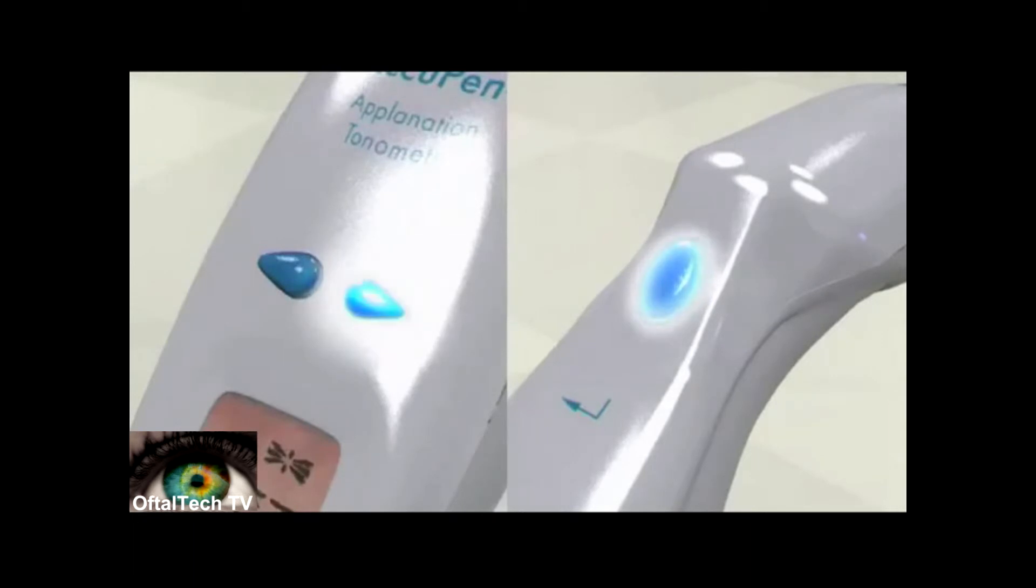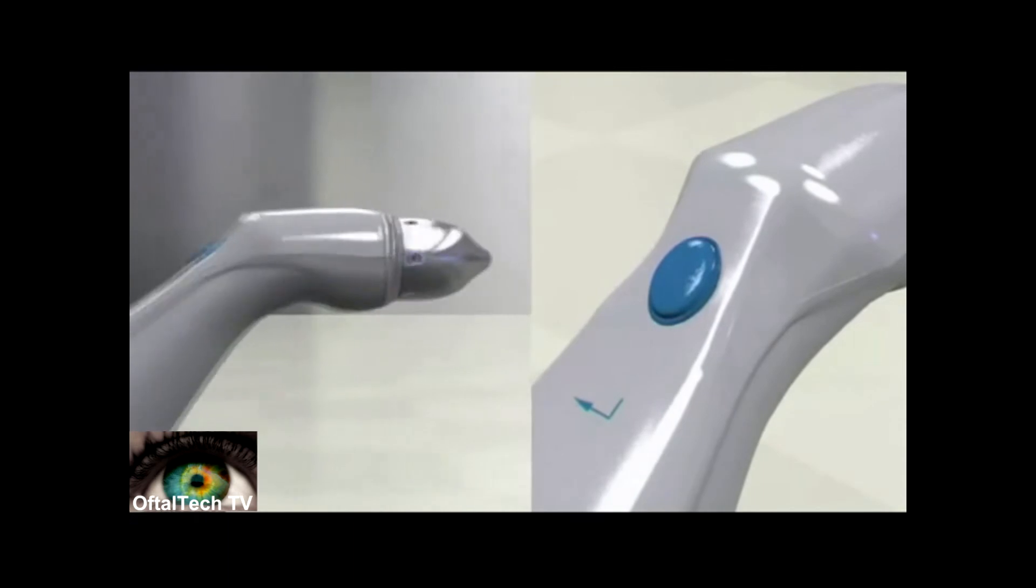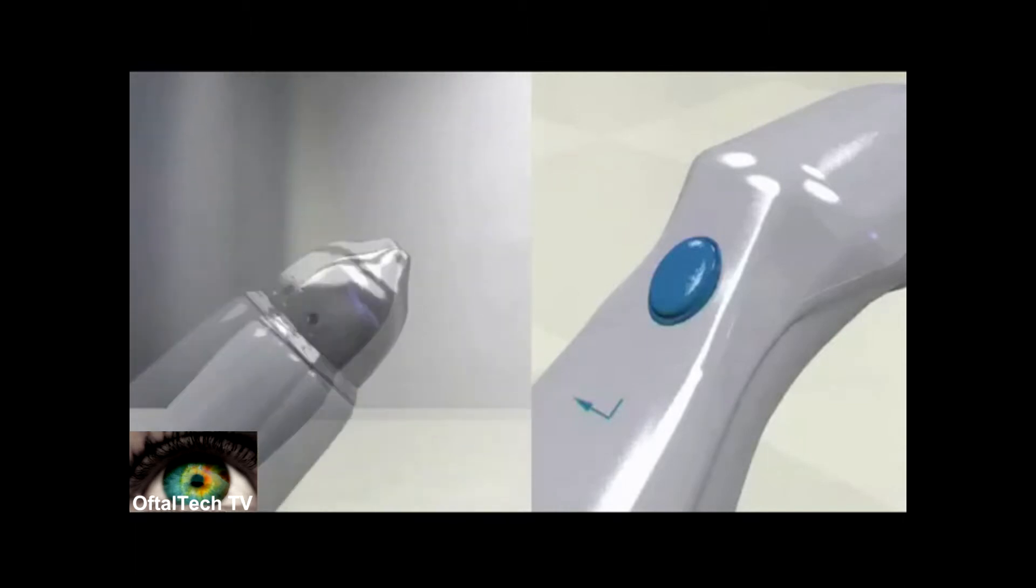Hold the transducer horizontal to the floor and press the action button. The unit will chirp and display probe up. Hold the unit so that the transducer tip is pointed directly in the air and press the action button.